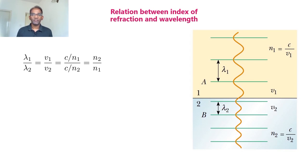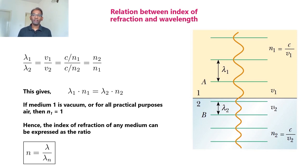Now let us find the relation between index of refraction and wavelength. Taking the ratio of lambda1 and lambda2 gives v1 divided by v2, which equals (c/n1) divided by (c/n2), which equals n2 divided by n1. Rearranging, lambda1 times n1 equals lambda2 times n2. If medium 1 is vacuum, then n1 equals 1, so the refractive index of any medium can be expressed as n equal to lambda divided by lambda_n, where lambda is the wavelength in vacuum and lambda_n is the wavelength in the medium.